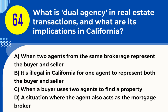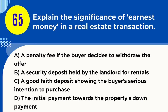Question 64. What is dual agency in real estate transactions and what are its implications in California? A. When two agents from the same brokerage represent the buyer and seller. B. It's illegal in California for one agent to represent both the buyer and seller. C. When a buyer uses two agents to find a property. D. A situation where the agent also acts as the mortgage broker. Answer: A. Explanation. Dual agency occurs when two agents from the same brokerage represent both the buyer and seller in the same transaction. In California, dual agency is legal but must be fully disclosed and agreed upon by both parties. It can raise concerns about conflicts of interest and the agent's ability to represent both sides fairly.